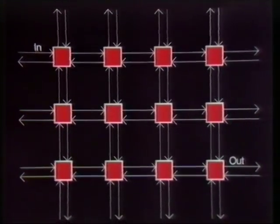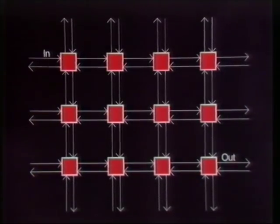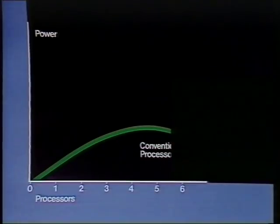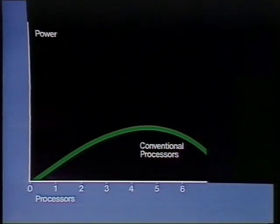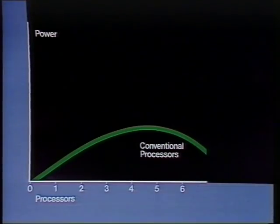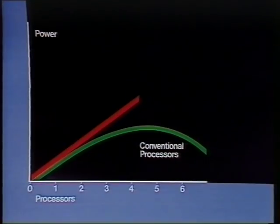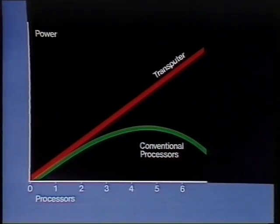In fact, communications capability increases as more transputers are added into the system. But as the curve on the graph dramatically shows, this isn't possible with a conventional microprocessor. As more are added, they reduce the performance of the overall system, and the peak would typically occur with about three to five processors on a single bus. Contrast this with the red curve, which shows that the performance of a multi-transputer system actually increases linearly as more are added.